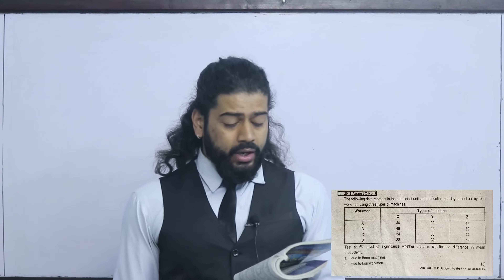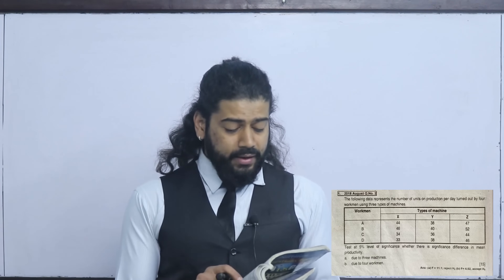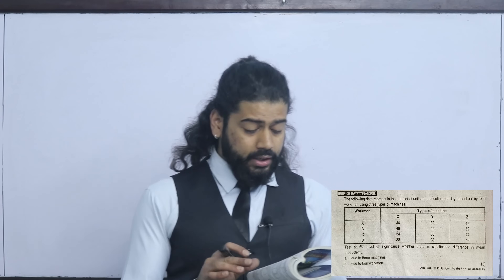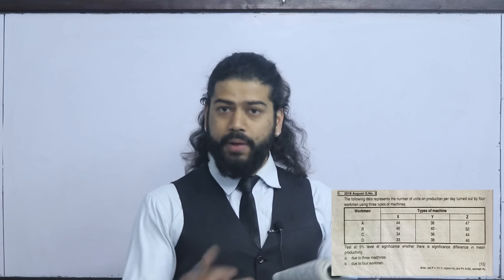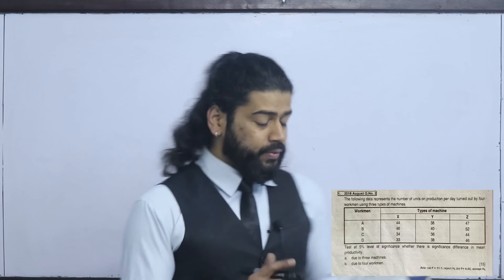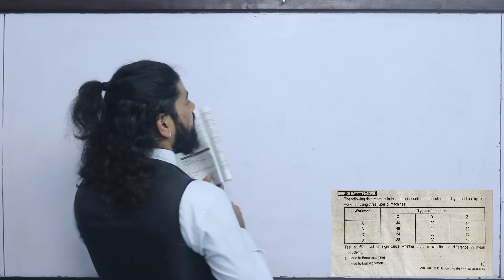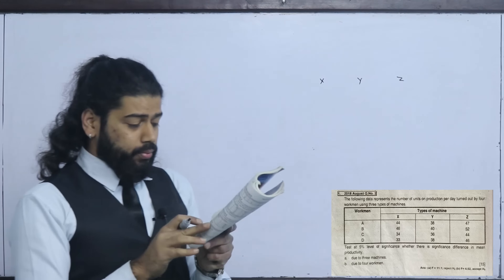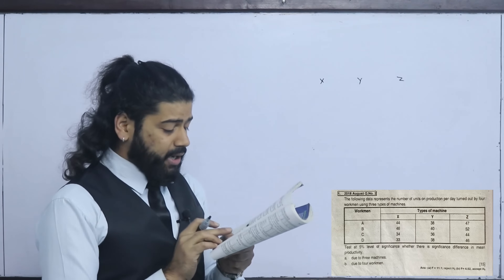Test at 5% level of significance whether there is a significant difference in mean productivity due to three machines X, Y, Z. This is the column for machines.